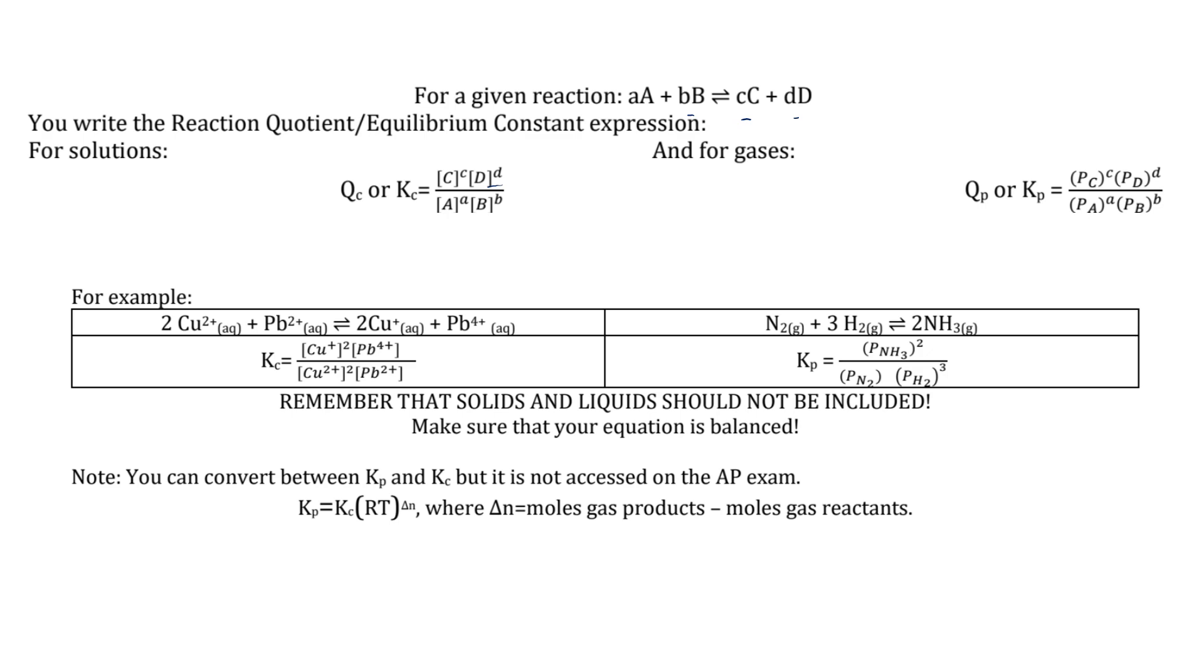For the first one, we have two moles of Cu2+ plus Pb2+ in a reversible reaction with two copper ions and a lead 4+ ion. These are all in solution, they're all aqueous, so these are concentrations. So the products: Cu+ squared times Pb4+ to the first power, over Cu2+ squared times Pb2+.